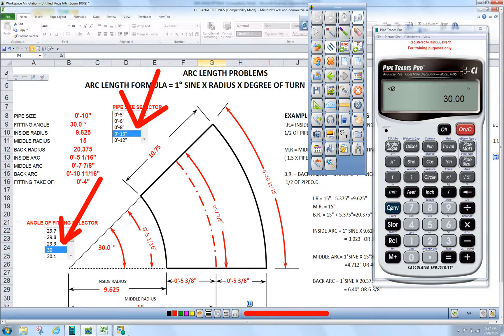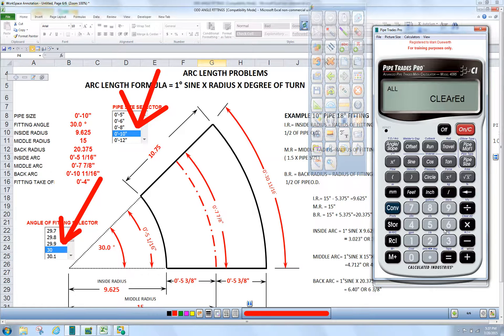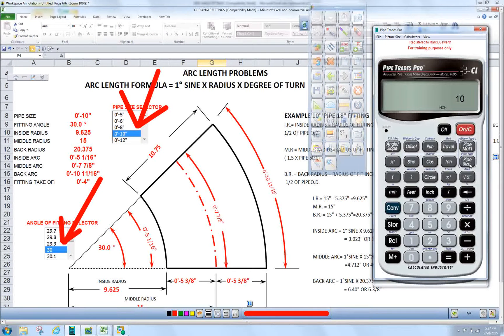So with the calculator, we're going to press convert clear as always. We're going to enter 10 inch pipe size. We're going to enter 30 degree angle slope.